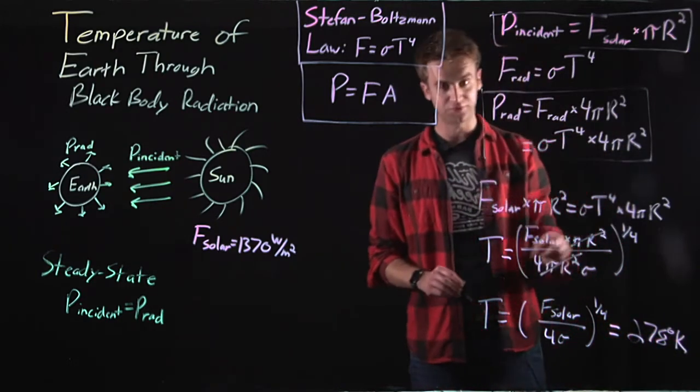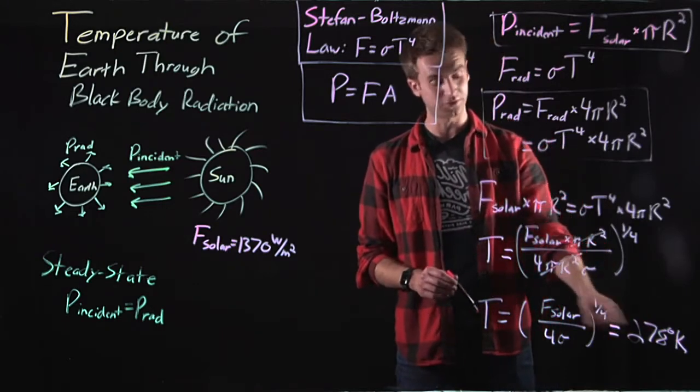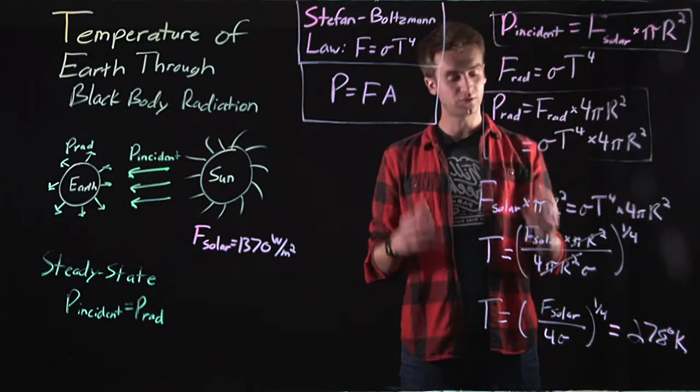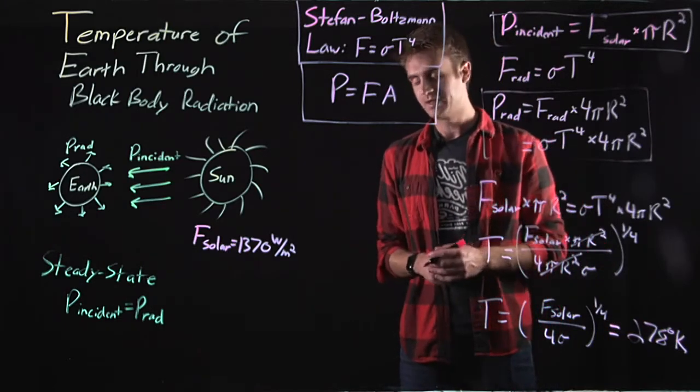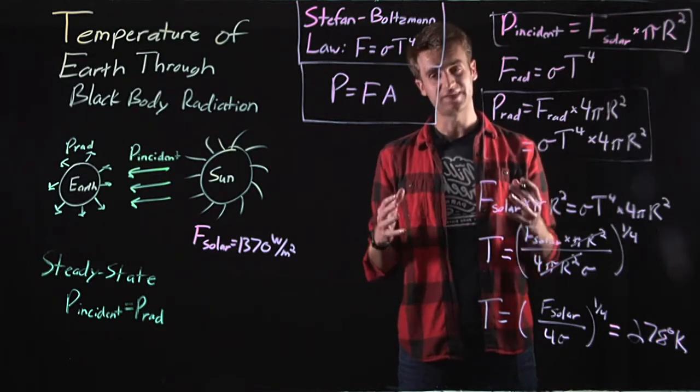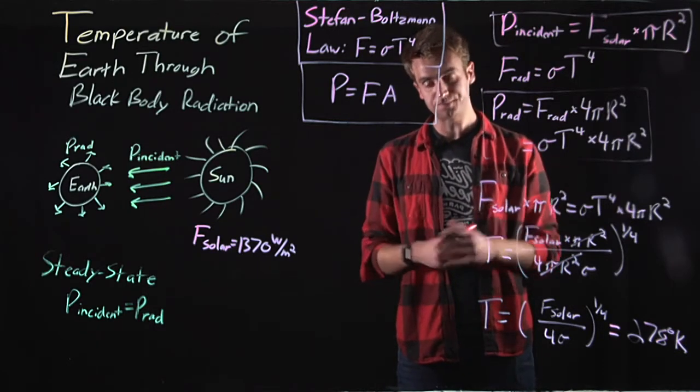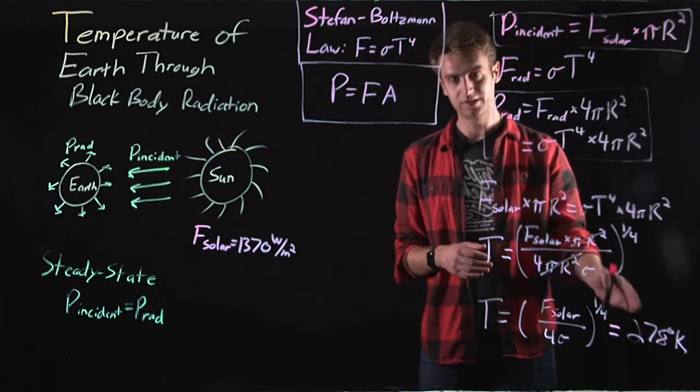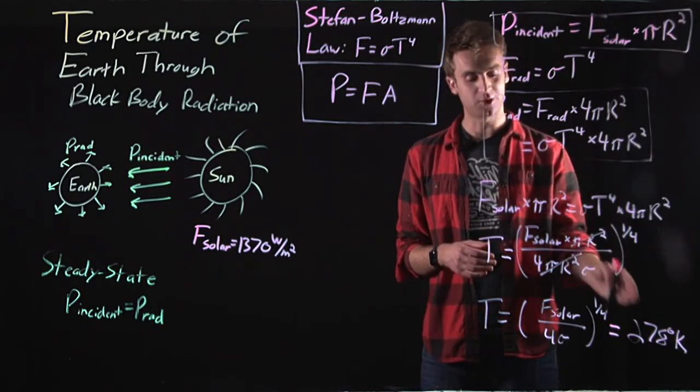Now, it's important to know that this is not the surface temperature of the Earth. And that's because the Earth isn't a perfect black-body radiator. It reflects some of the energy. It has an atmosphere that holds in some of the energy. And so it does not work as a perfect black-body radiator.